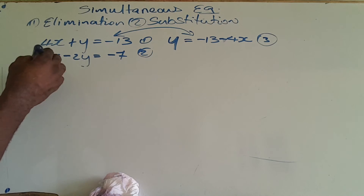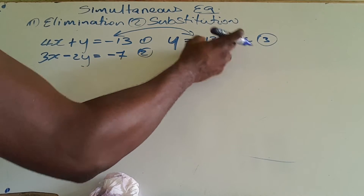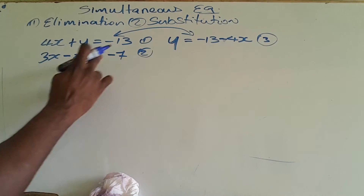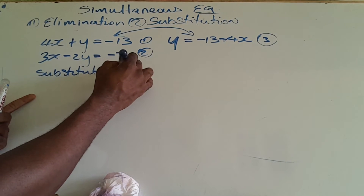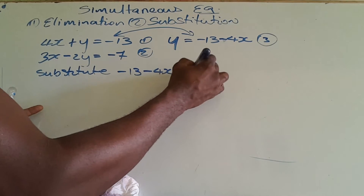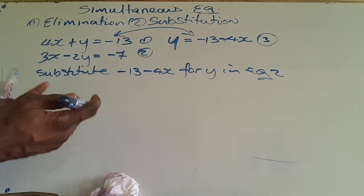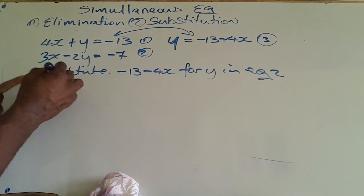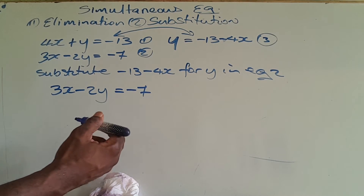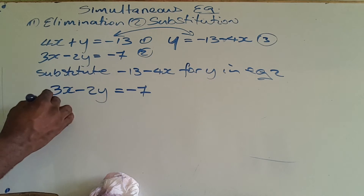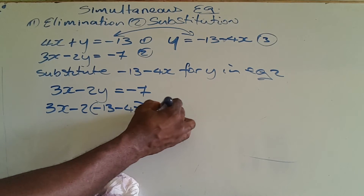Now I'm going to substitute y in the second equation. Because y is equal to negative 13 minus 4x, I'm going to substitute negative 13 minus 4x for y in equation 2. I'm doing it in equation 2 because equation 1 and equation 3 are the same thing. So equation 2 becomes: 3x minus 2 times (negative 13 minus 4x) is equal to negative 7.